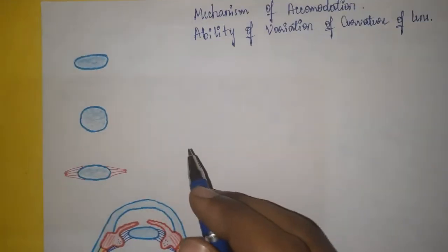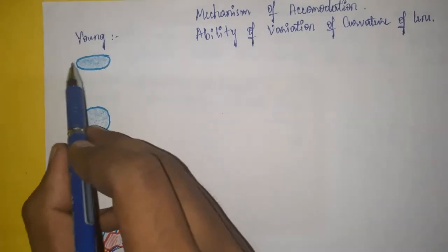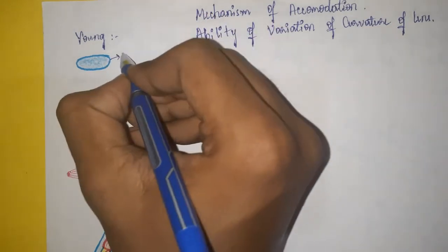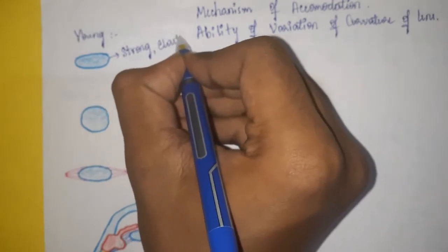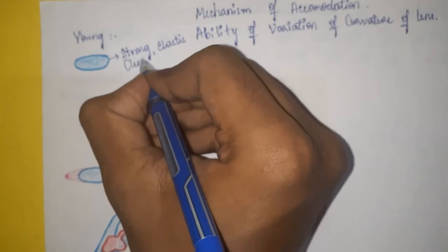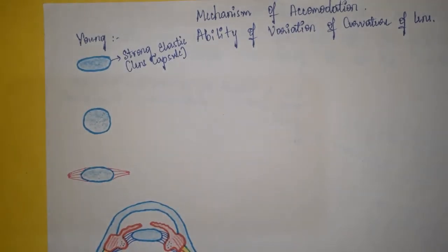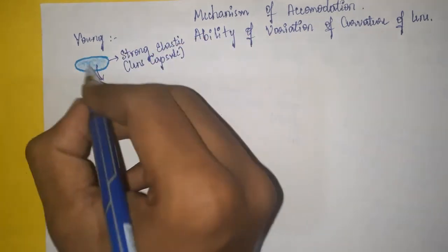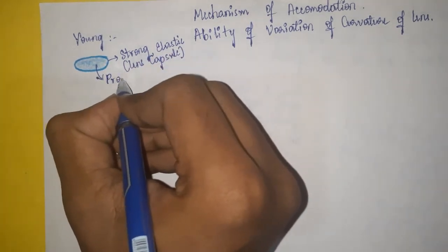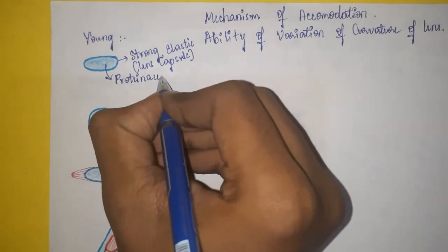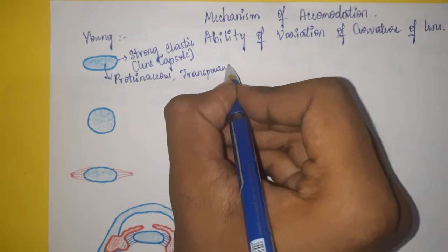You should know some introduction. In young people, the lens consists of a strong elastic capsule. This lens capsule contains a fluid which is viscous, transparent, and proteinaceous.